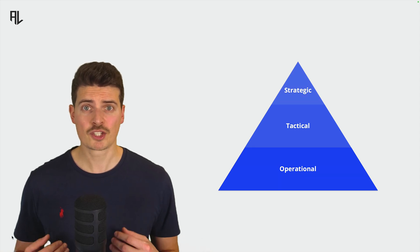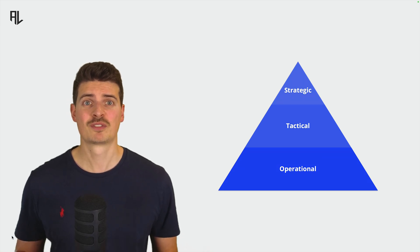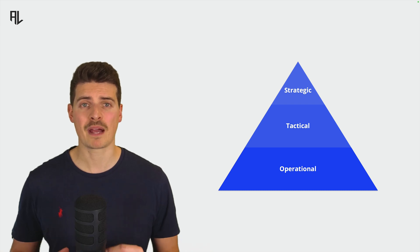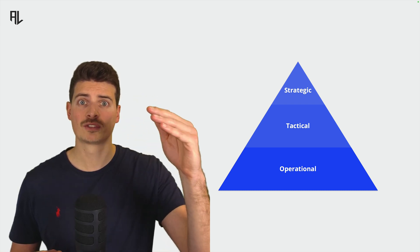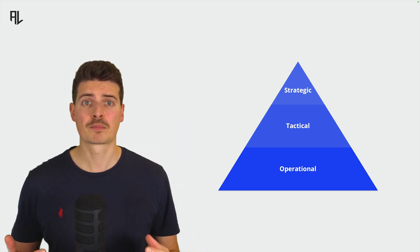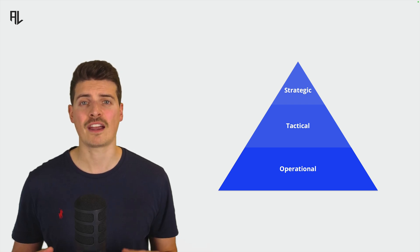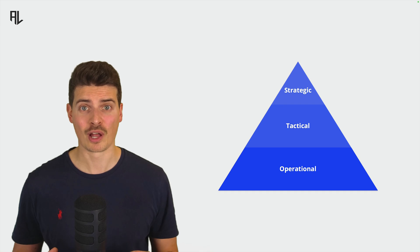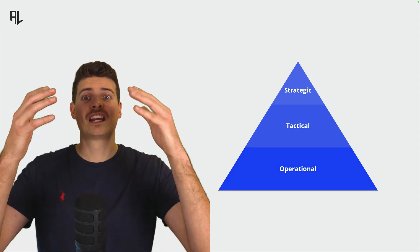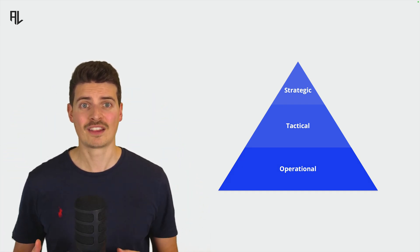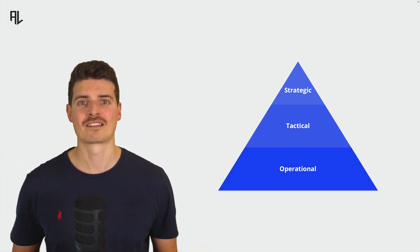By translating strategic objectives into tactical and operational objectives, we create a clear path from the high-level goal to the everyday actions. This approach ensures that the entire organization is aligned and working effectively towards the same end goal — making lofty and ambitious targets attainable by defining the steps needed to get there on every level of the organization.